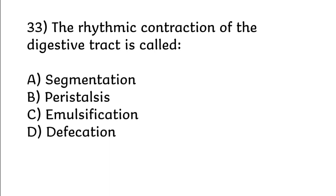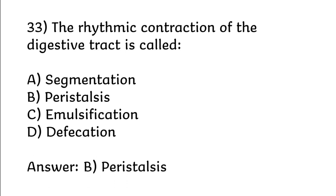The rhythmic contraction of the digestive tract is called: segmentation, peristalsis, emulsification, digestion. Correct answer is Option B: Peristalsis.